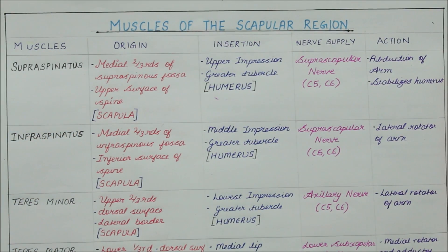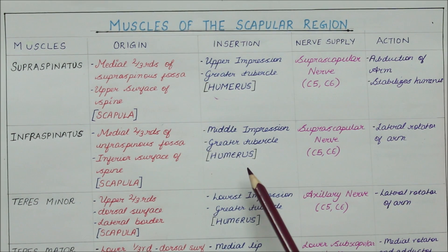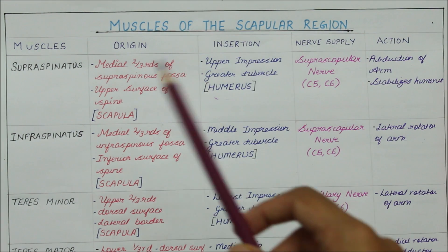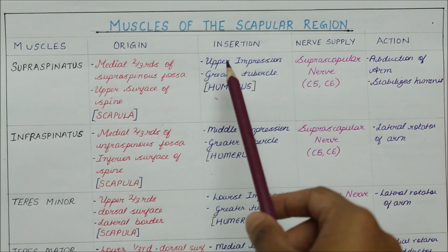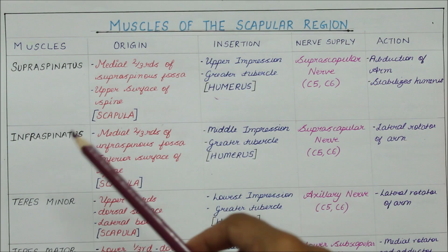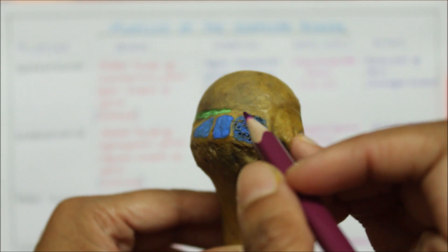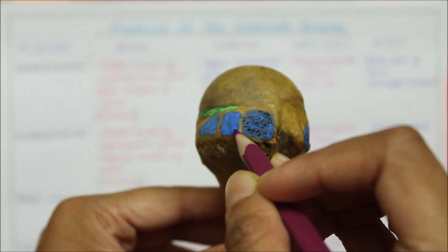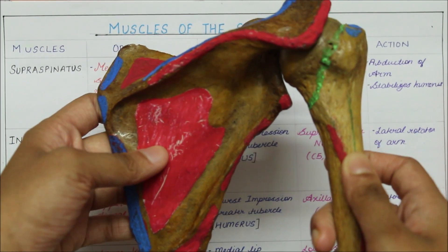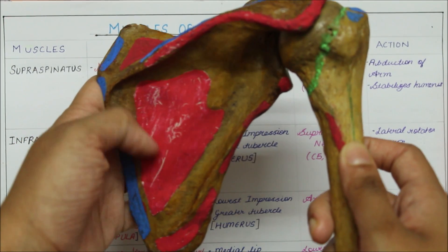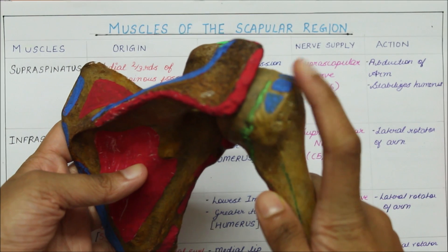Looking at its insertion, the infraspinatus is inserted into the middle impression of the greater tubercle of the humerus. A way to remember this is that since it comes next to the supraspinatus — which inserts on the upper impression — the infraspinatus comes just next to it, on the middle impression of the greater tubercle. As you can see here, the infraspinatus inserts itself on the middle impression of the greater tubercle of the humerus. As a whole, the infraspinatus originates from the infraspinous fossa and inserts into the middle impression of the greater tubercle of the humerus.